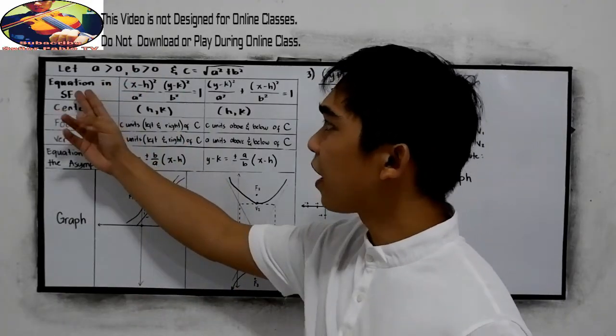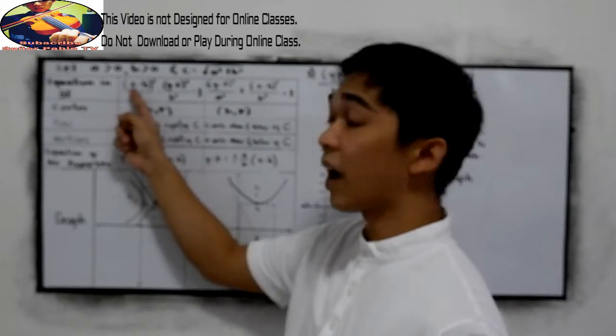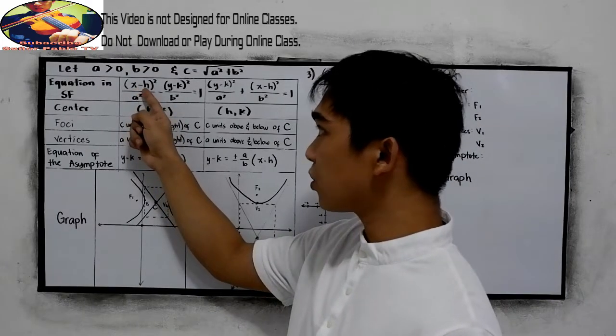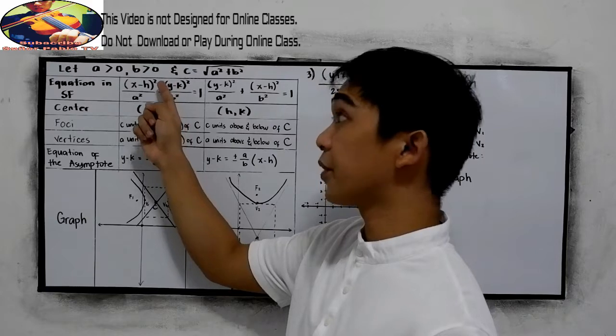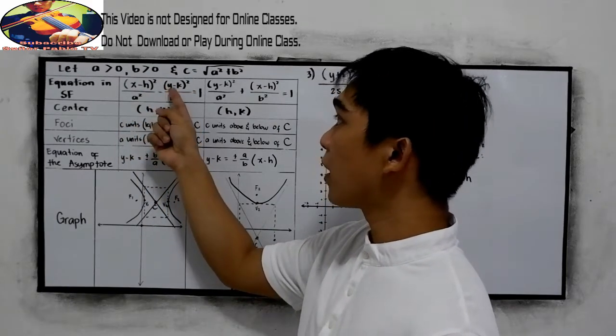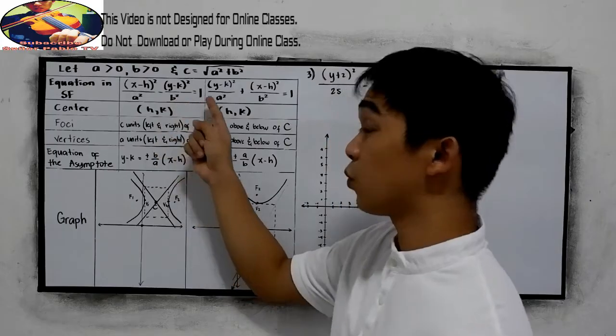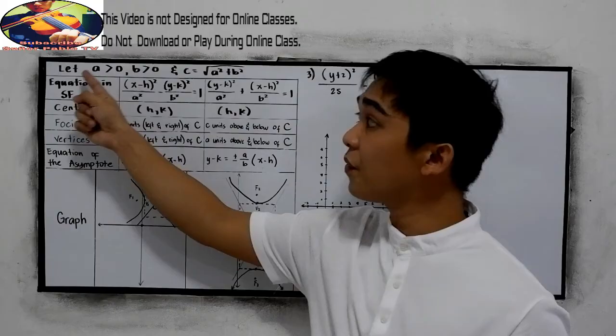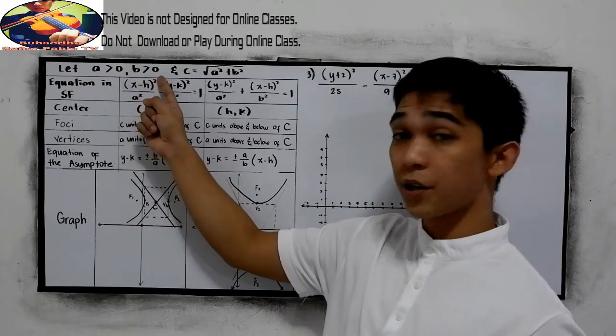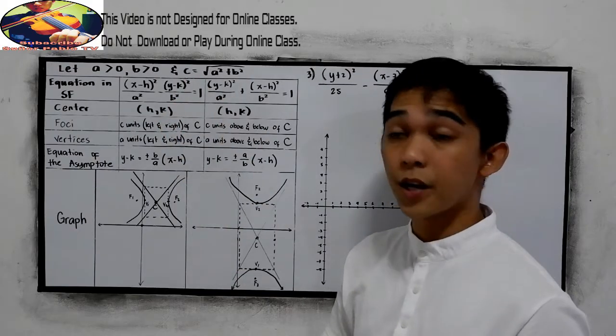So if our equation in the standard form is like this one, we have the hk for the center for this, quantity x minus h raised to 2 over a squared minus quantity y minus k raised to 2 over b squared is equal to 1. So this is our condition, let a is greater than 0, b is greater than 0, and c is equal to the square root of a squared plus b squared.